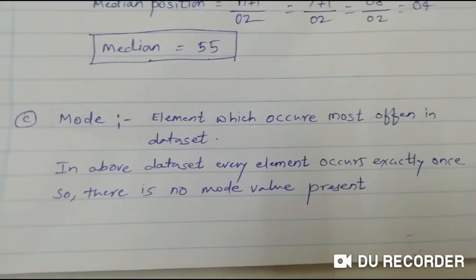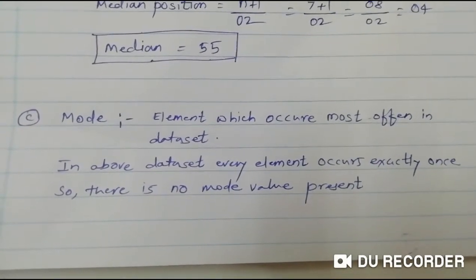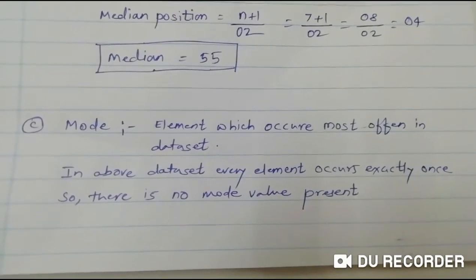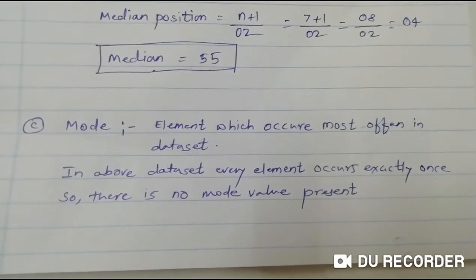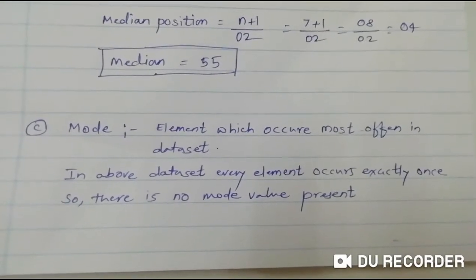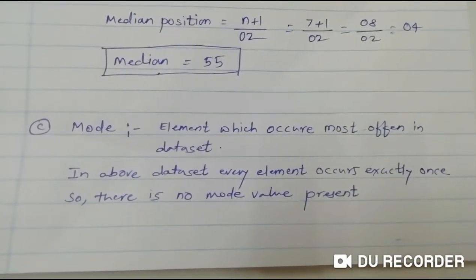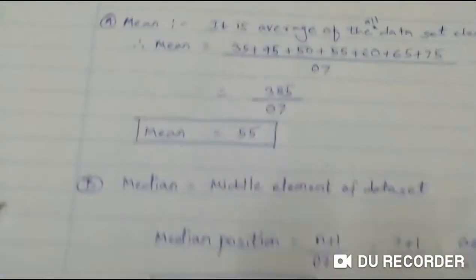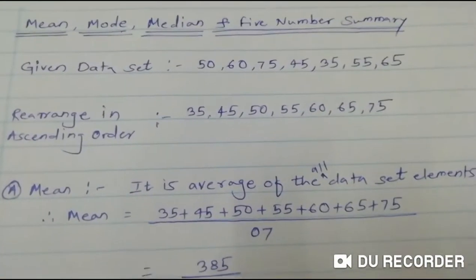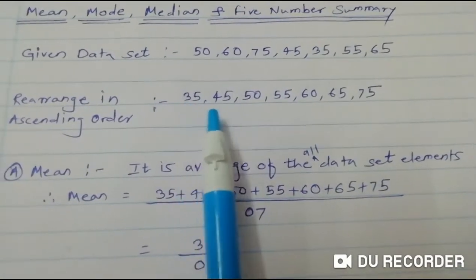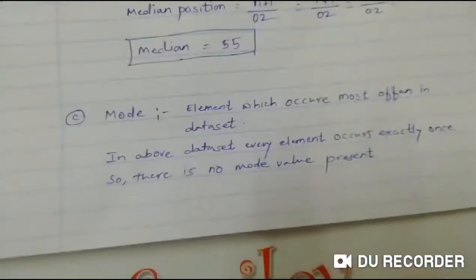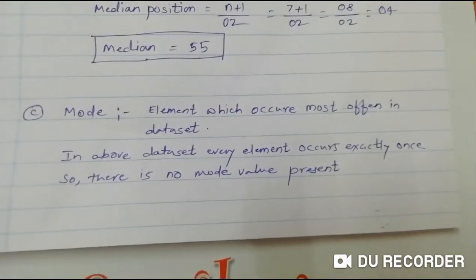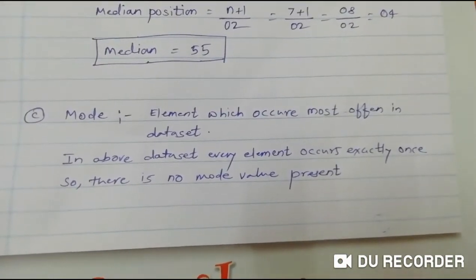Now next is mode. Mode is very easy — it is the element which occurs most often in the data set. For example, if element 10 occurs two or three times, more than other elements, then 10 would be the mode. But if we look at our data set, every element occurs exactly once — there is no repetition. So we can say there is no mode value present in our data set.